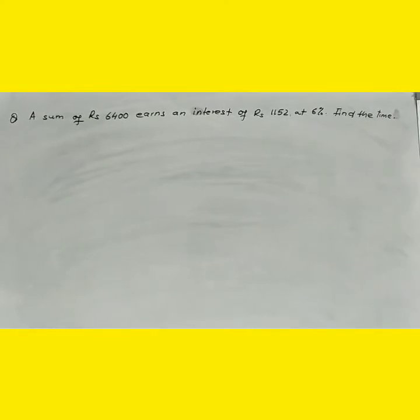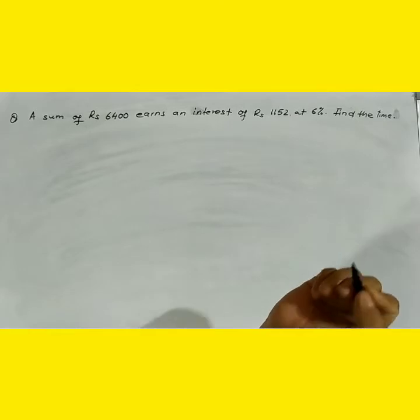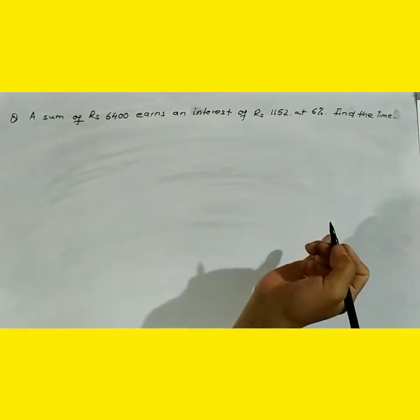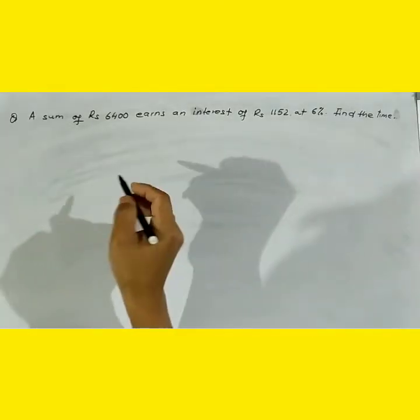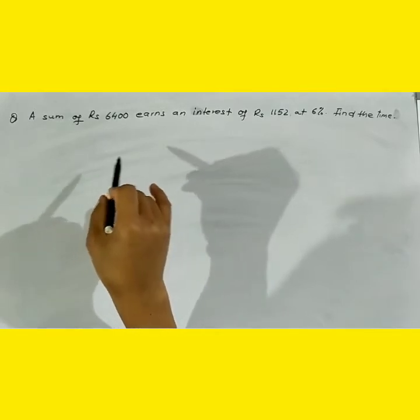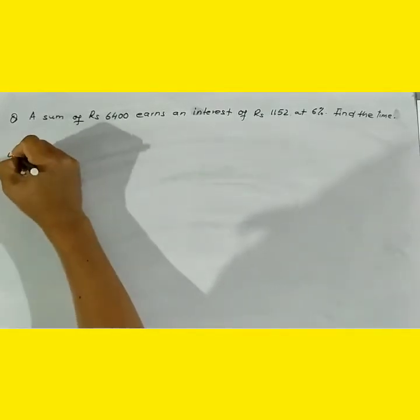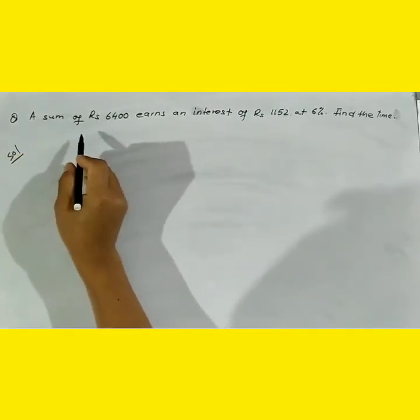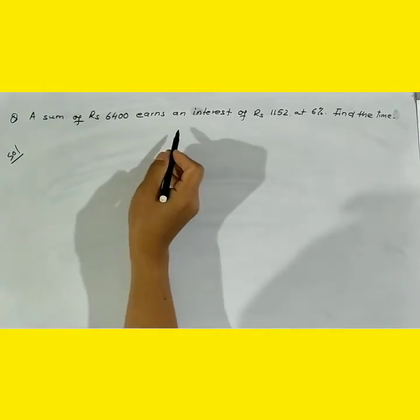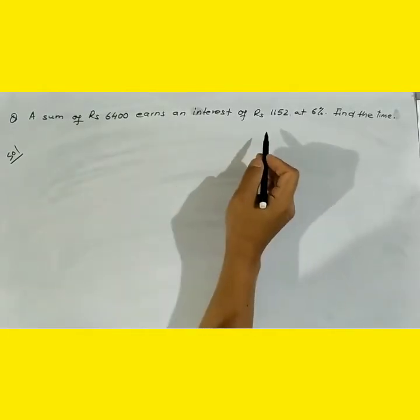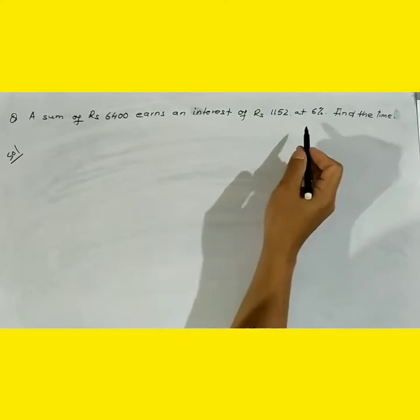Hello everyone, myself Kondo. Today we will learn how to find the time in simple interest. Here I have a problem: A sum of rupees 6400 earns an interest of rupees 1152 at 6%. Find the time.